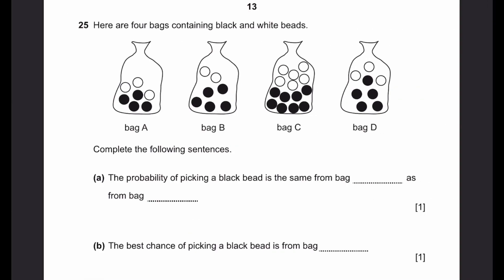Question 25. Here are four bags containing black and white beads. Complete the following sentences. A. Probability of picking a black bead is the same from bag blank as bag blank. Bag A is 4 out of total 7 beads. Bag B is 5 out of 7 beads. Bag C is 8 out of 14 which equals 4 out of 7 beads. And bag D is 5 out of 8 beads. This is the probability of getting a black bead. Bag A and bag C have the same probability. B. The best chance of picking a black bead is from bag B.